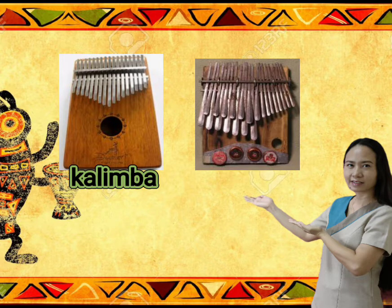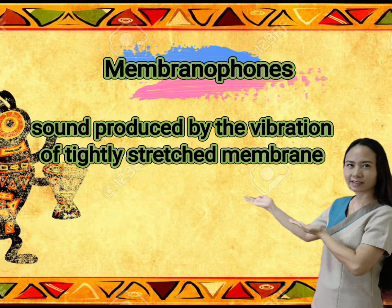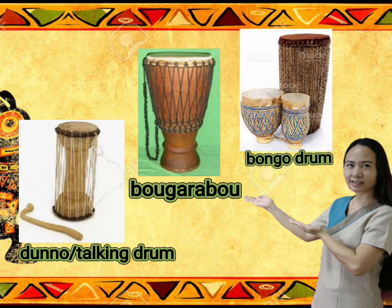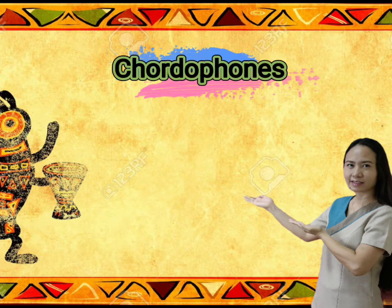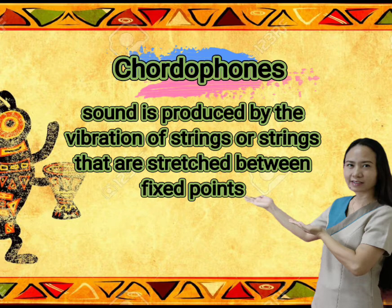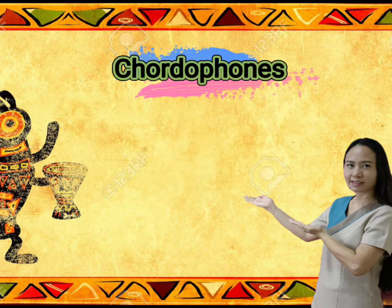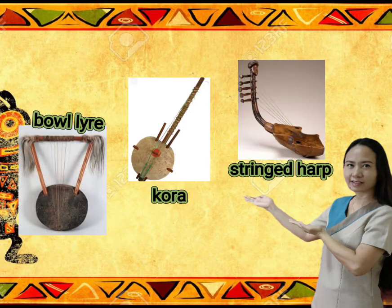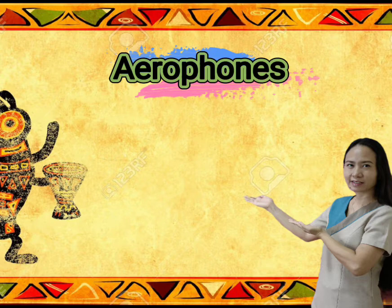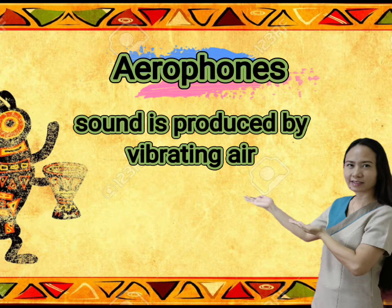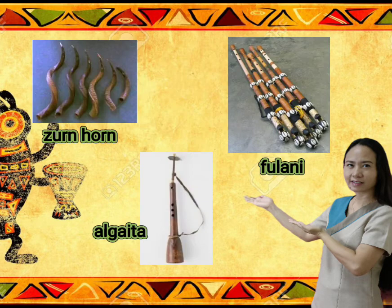Third, we have Membranophones. Membranophones produce sound by the vibration of a tightly stretched membrane. Next are Chordophones, where sound is produced by the vibration of a string or strings stretched between fixed points. The next category is Aerophones, where sound is produced by vibrating air. Here are the examples of Aerophone African instruments.